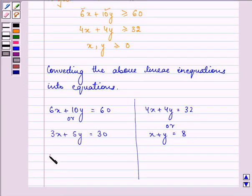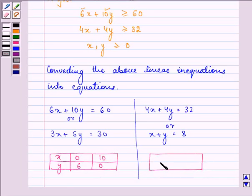Now, for these two equations, let us find out 2 points that we need to plot on the graph. Now when X is 0, then the value of Y is 6 whereas when Y is 0, then the value of X is 10. Similarly, over here, we have when the value of X is 0, Y is 8 and when Y is 0, X is 8.